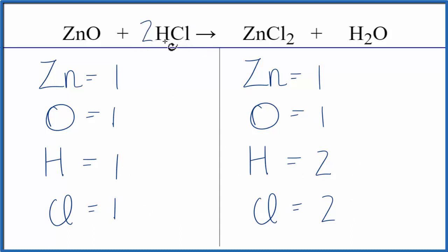This two applies to everything. So we have one times two. That would give us two hydrogens, and the hydrogens would be balanced.